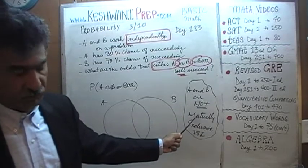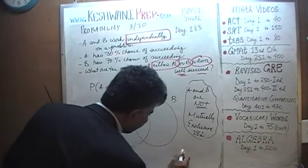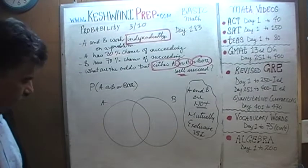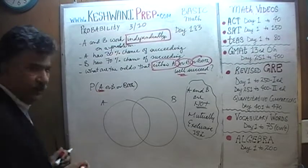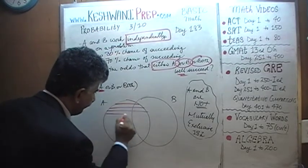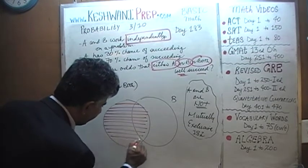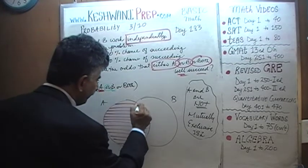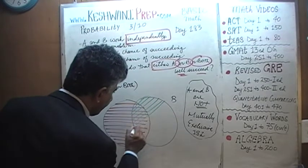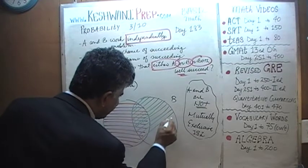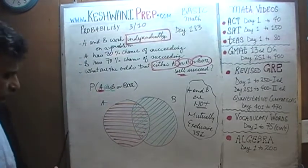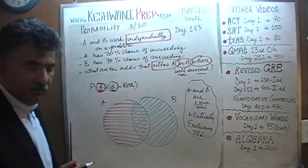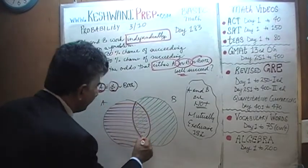If A and B were mutually exclusive, we could not have drawn the Venn diagram in this manner — it would have been drawn differently. They are not mutually exclusive. So: the odds of A happening plus the odds of B happening. By the time we talk about A or B happening, we have already included the overlapping area, which represents the odds of both happening. Therefore, we need to account for the fact that this overlap area is counted twice.